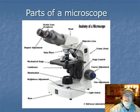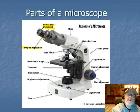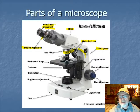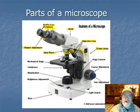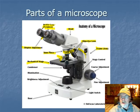Looking at another diagram showing the same thing: here's the eyepiece with the oculars, the diopter adjustment, the head, the arm or frame in the back, the objective lenses, the revolving nosepiece, and the mechanical stage. There's also that slide clip that locks the slide in.